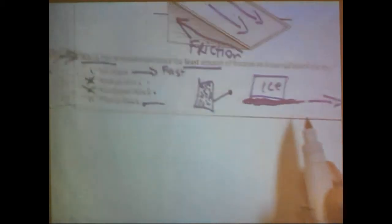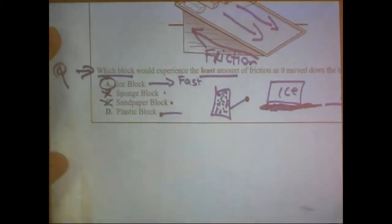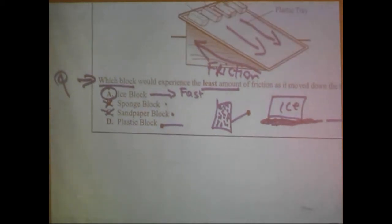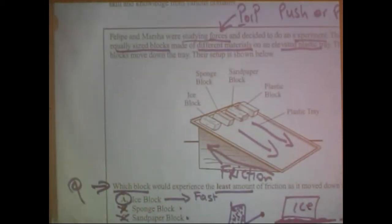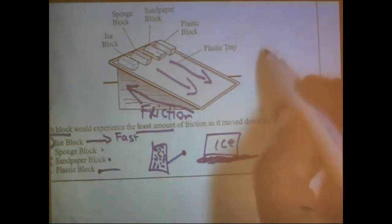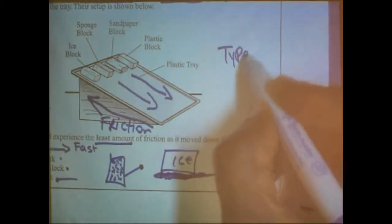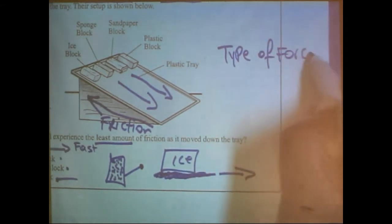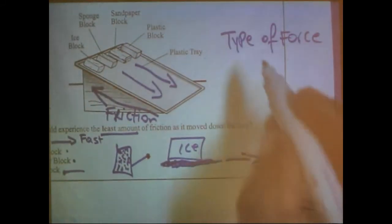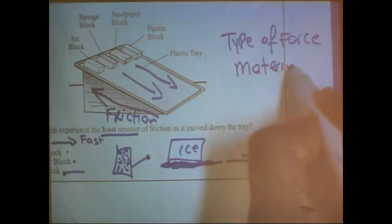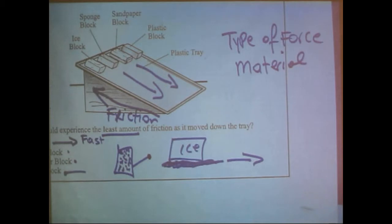So that's basically our answer. This is going to be our answer. So we move from a low complexity to a moderate complexity. The low complexity was asking us about the type of force. And then this one is asking us which material. Let's see what the high complexity is talking about.